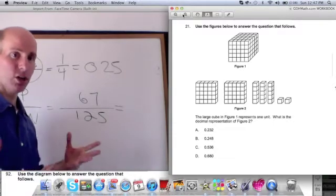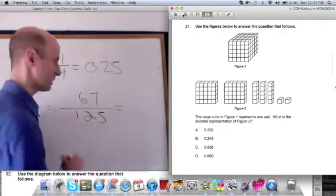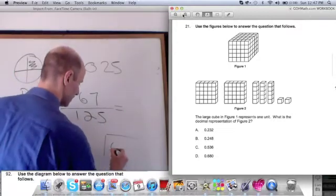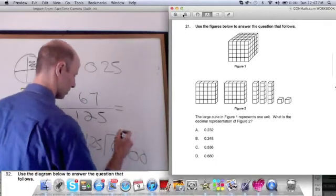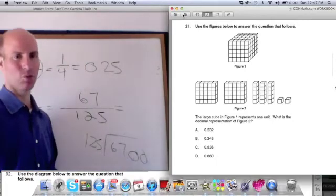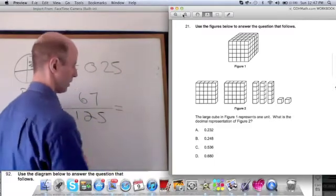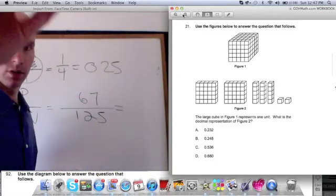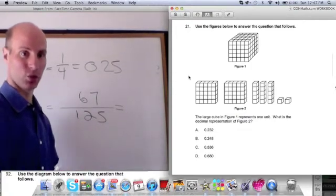Now, you could, if you were really crazy, you could be like, 67, what's 67? 67 divided by 125. And you could start going at it that way. I don't recommend doing it that way. I think that's going to take way too long. I would first, I would first, look at the answer choices.